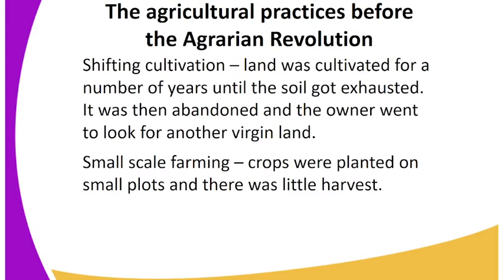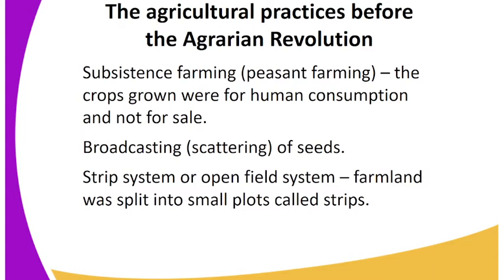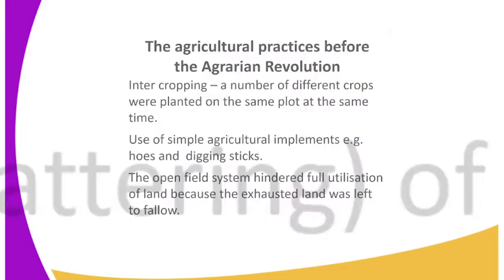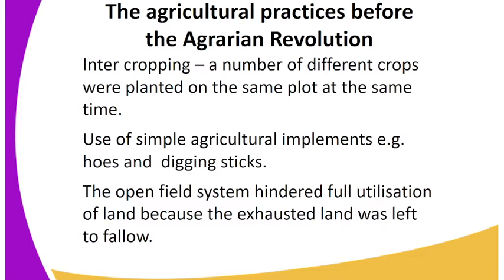Before the revolution, farming practices included shift cultivation, where land was cultivated for a number of years until the soil got exhausted, then abandoned as the owner went to look for virgin land. Small-scale farming meant crops were planted on small plots with little harvest. Subsistence farming meant crops grown were for human consumption and not for sale. The open field system split farmland into small plots called strips, and intercropping involved planting different crops on the same plot at the same time.